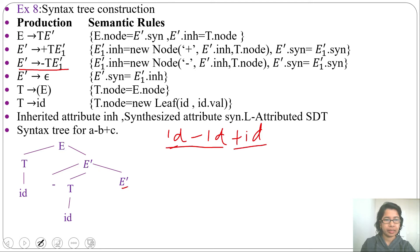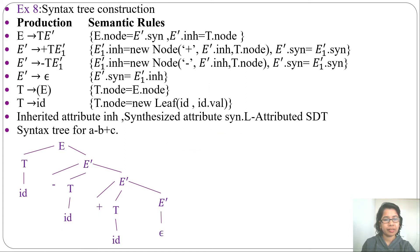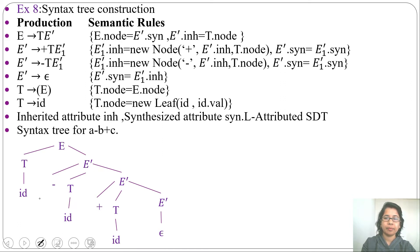Next, from this E' I derive plus T E1', then from T I derive id. Then from this E' I derive epsilon — derivation tree is done for a minus b plus c. For this id the lexical value is a, for this id it is b, and for this id it is c. Now we execute the semantic actions on this parse tree. It is an L-attributed SDT, so we evaluate in top-down, pre-order, or during depth-first search. In S-attributed SDT we evaluate bottom-up during reduction or post-order traversal.